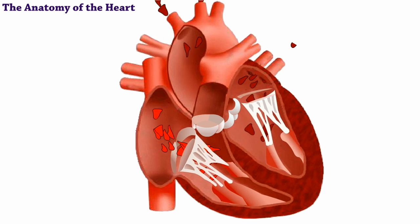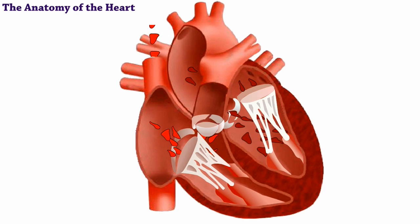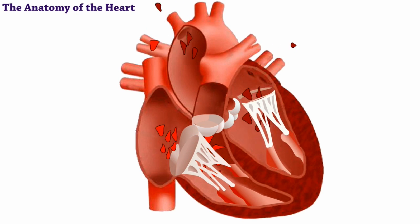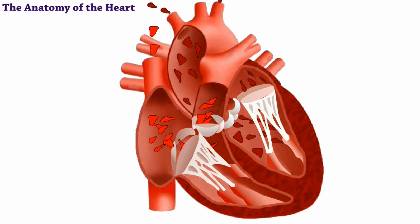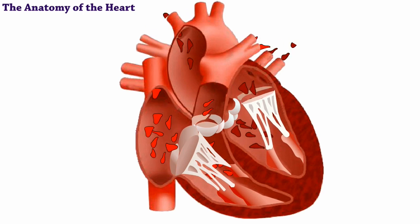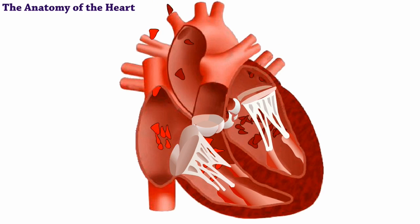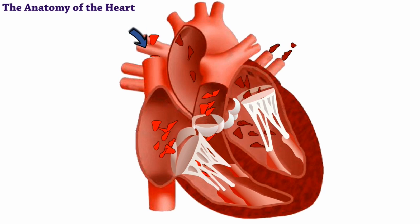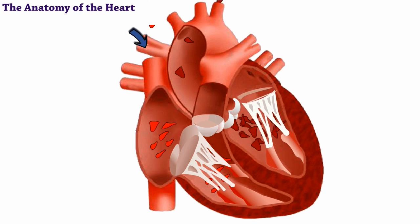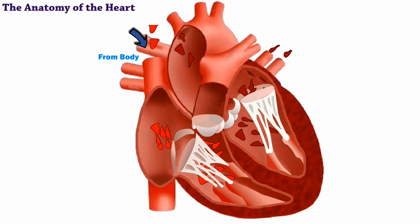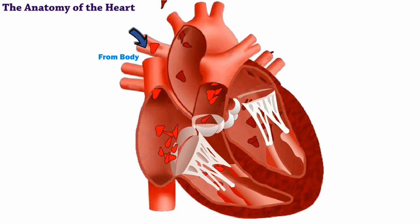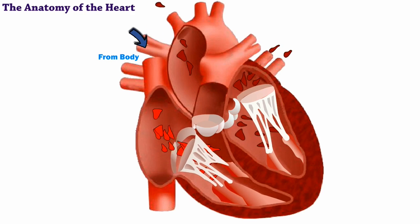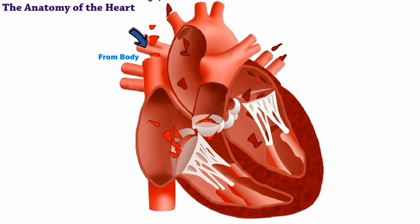Finally, let's see how all of these muscles, chambers, and valves work together. Watch how blood flows through the heart. This diagram shows the blood entering the heart from the body. At this stage, it's oxygen-poor.